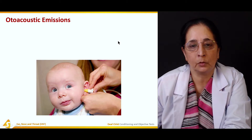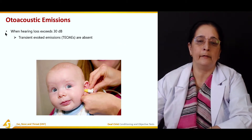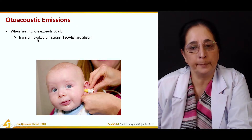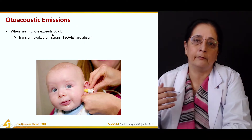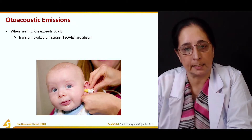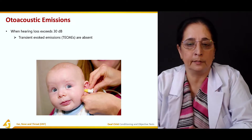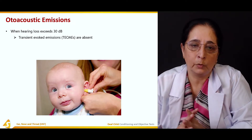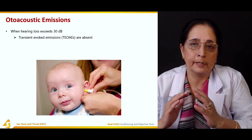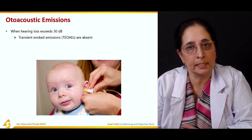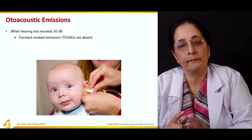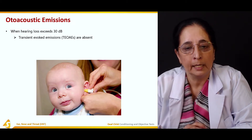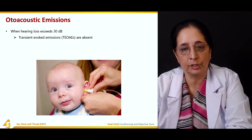Otoacoustic emissions are performed when hearing loss exceeds 30 decibels. We have two types: transient evoked otoacoustic emissions, which are absent if hearing loss is more than 30 decibels, and distortion product emissions, which are absent if hearing loss exceeds 50 decibels.